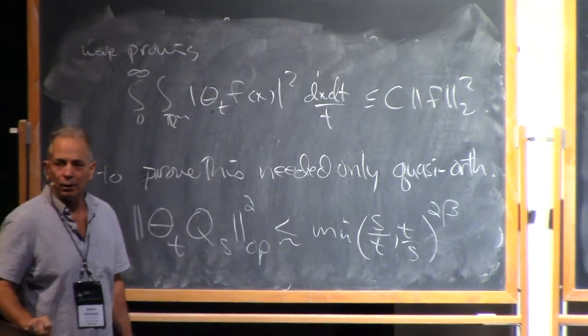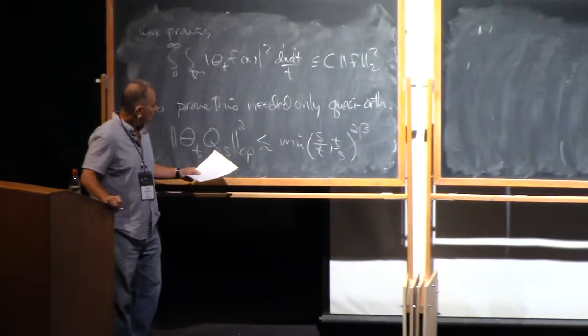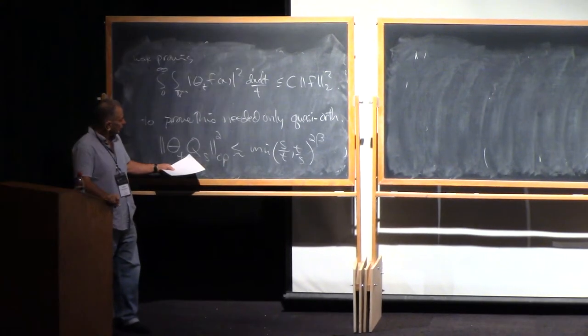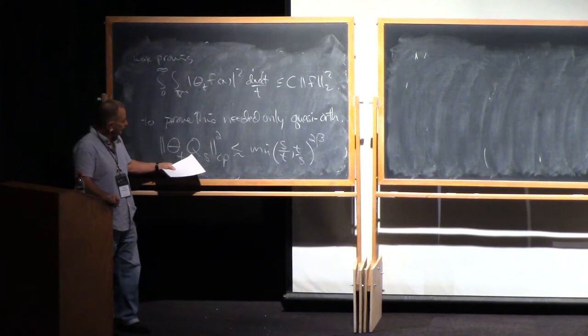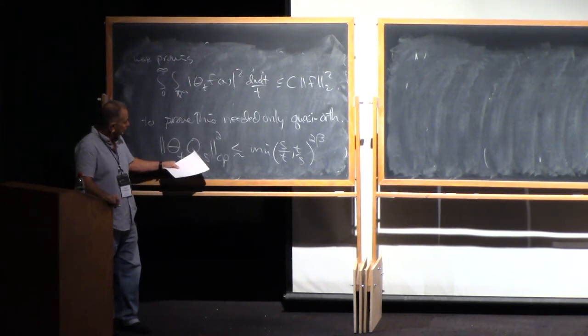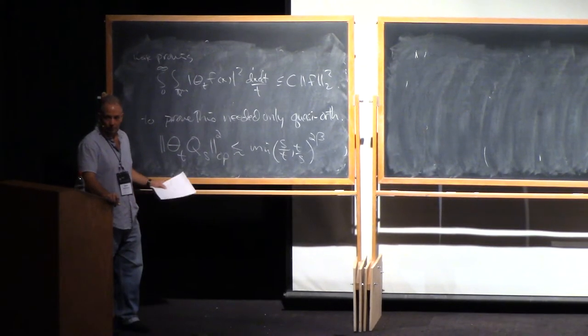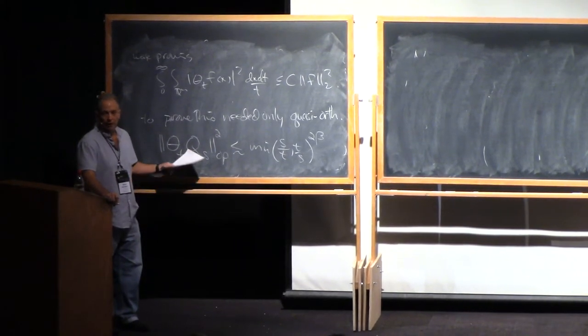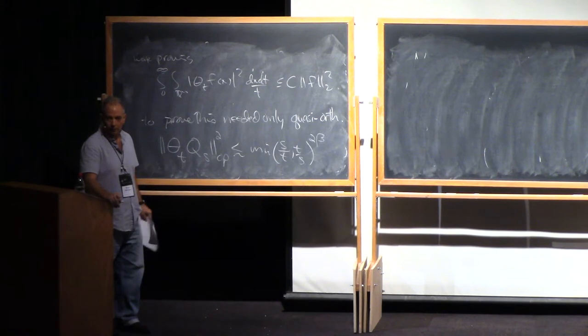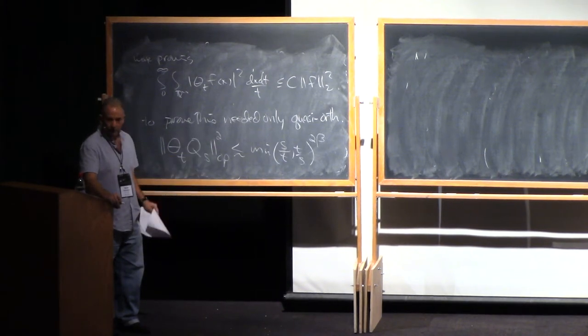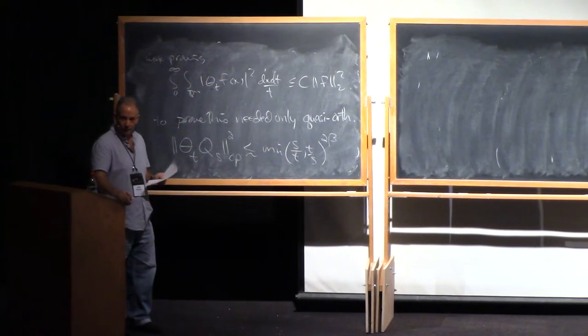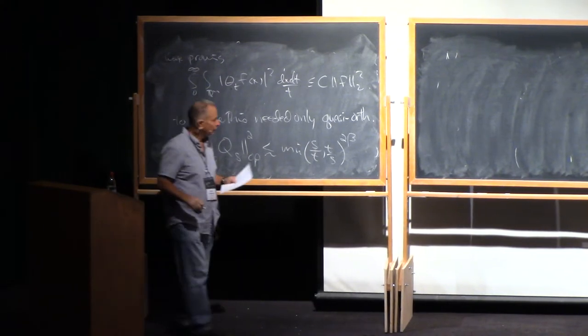Why is it called quasi-orthogonality? Well, because true orthogonality would be that these guys give you zero if s is different than t when you compose them. So we don't have that, but we have decay away from the diagonal. It's not purely diagonalized, but it decays away from the diagonal.